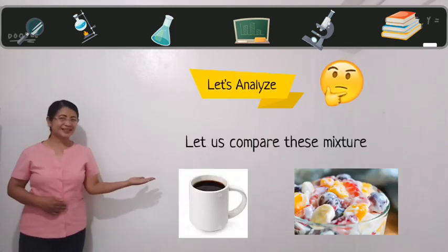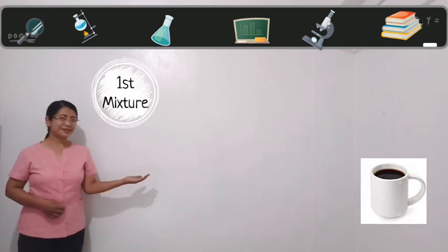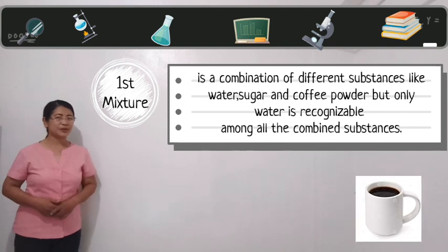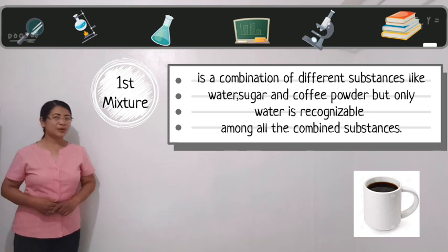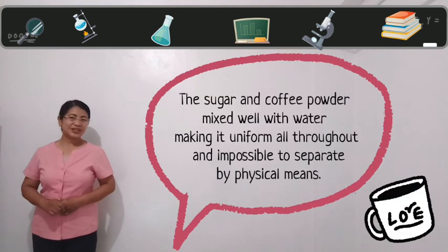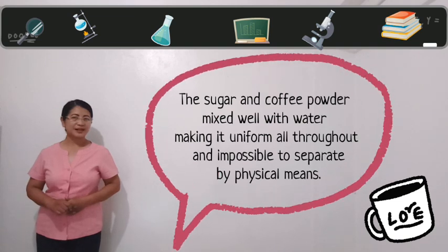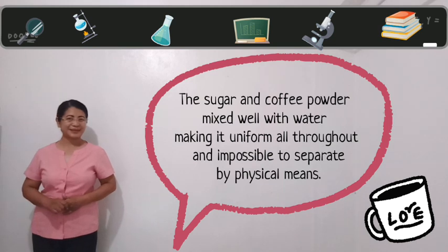Let's compare these two kinds of mixtures. The first mixture is a combination of different substances like water, sugar, and coffee powder. But only water is recognizable among all the combined substances. The sugar and coffee powder mix well with water, making it uniform all throughout and impossible to separate by physical means.